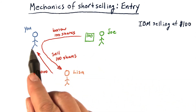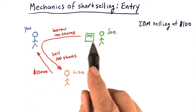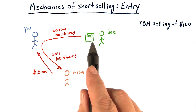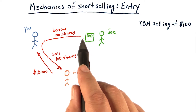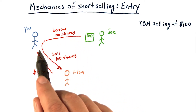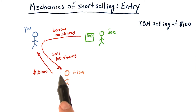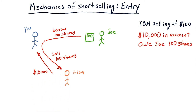Let me recap that. You want to sell IBM short, Joe has 100 shares of IBM, and Lisa wants to buy IBM. So you borrow those 100 shares from Joe, you immediately turn around and sell them to Lisa, and you get $10,000. The result of this transaction, after everything settles, is you have $10,000 in your account, but you owe Joe 100 shares of stock.